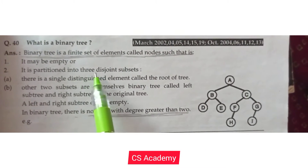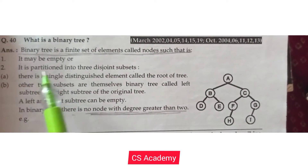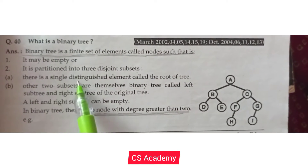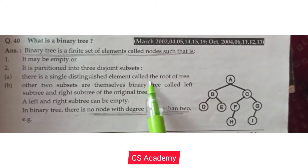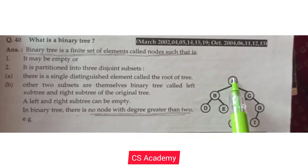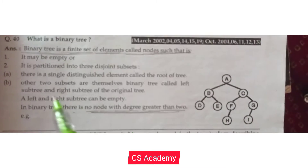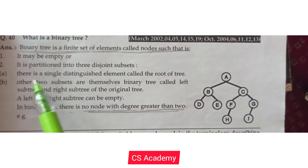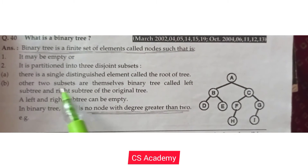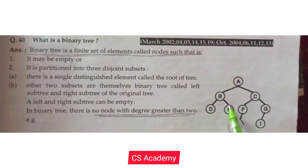The node is partitioned into three disjoint subsets. There is a single distinguished element called the root of the tree. The other two subsets are themselves binary trees, called the left subtree and right subtree of the original tree.